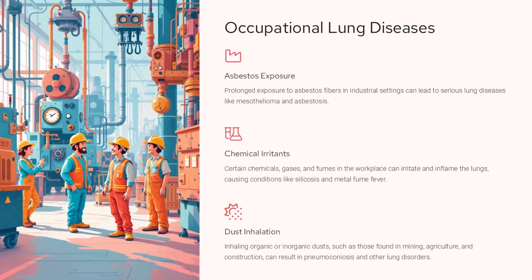Occupational lung diseases are serious health issues caused by exposure to hazardous substances in the workplace. Asbestos exposure can lead to mesothelioma and asbestosis, serious and often fatal lung conditions. Certain chemicals, gases, and fumes can irritate and inflame the lungs, causing silicosis, metal fume fever, and other lung disorders. Inhaling organic or inorganic dusts found in mining, agriculture, and construction can result in pneumoconiosis and other lung diseases. It is critical that employers take steps to protect workers from these hazards and that employees use proper protective equipment. Early detection and treatment are key to managing these conditions.